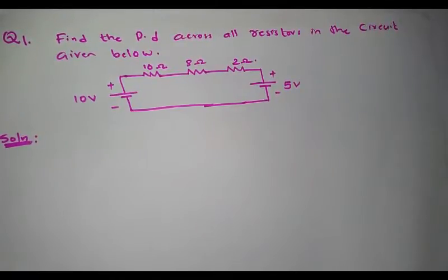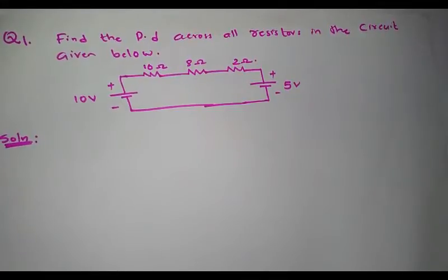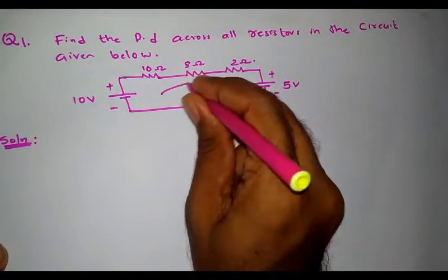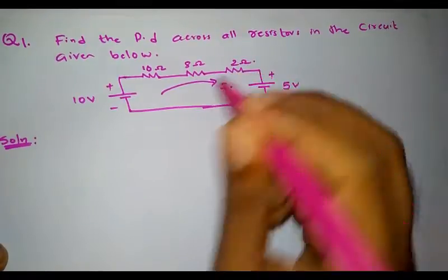Before going through the problem, we have to carefully understand the sign convention that needs to be applied for the voltage sources and resistors, which I have explained earlier. Since this is a closed circuit, we first have to assume the direction of current. We will assume the direction of current to be clockwise — that is the direction of current I.